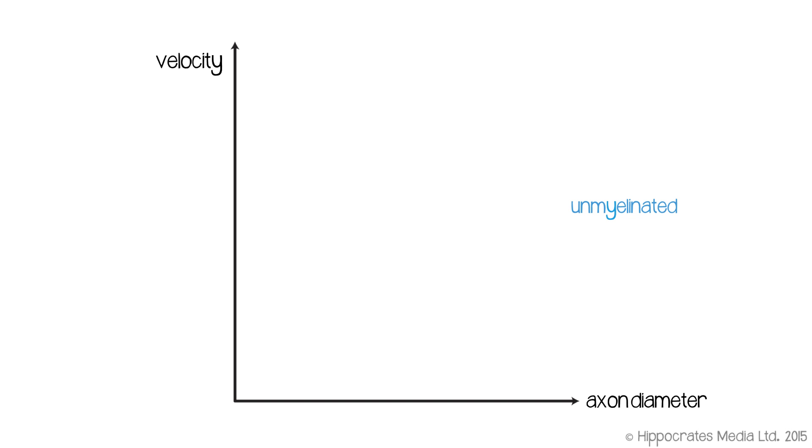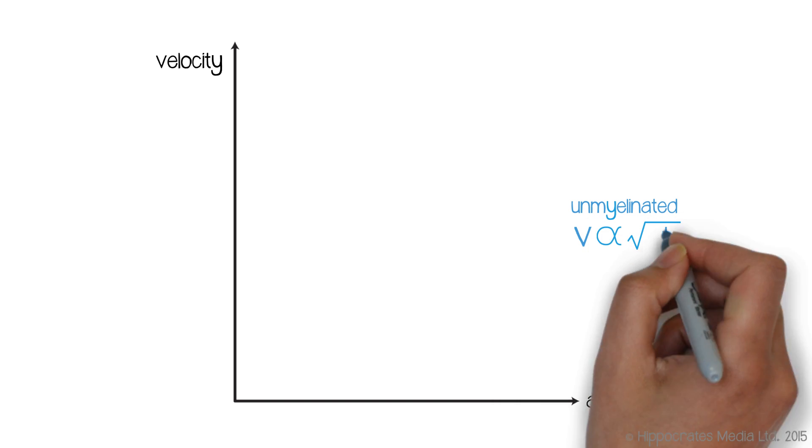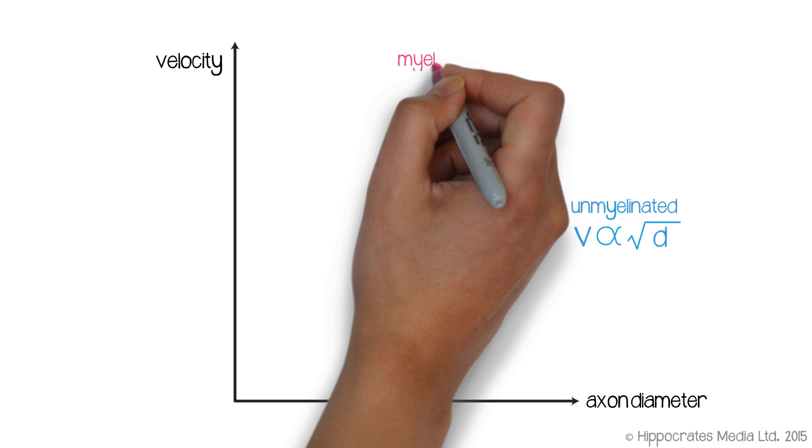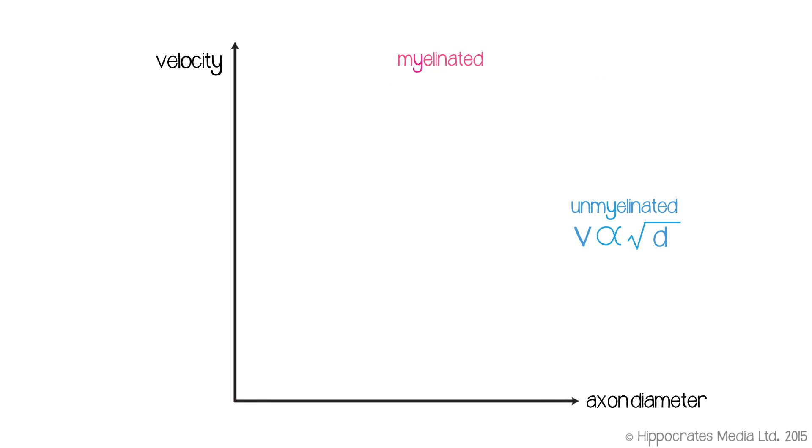The basic relationships were considered in a famous paper by Rushton in 1951. What he concluded is that for an unmyelinated nerve fiber, the conduction velocity is proportional to the square root of the diameter. For a myelinated nerve fiber, the conduction velocity is simply proportional to diameter. And what Rushton did is he put these two relationships on the same graph. So the x-axis is the diameter of the nerve axon, the y-axis is the conduction velocity.